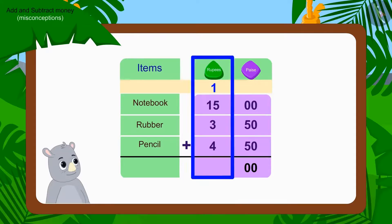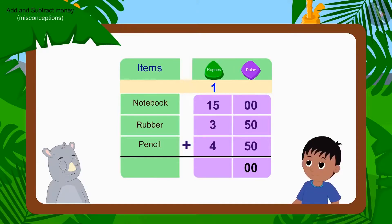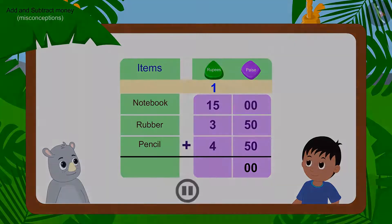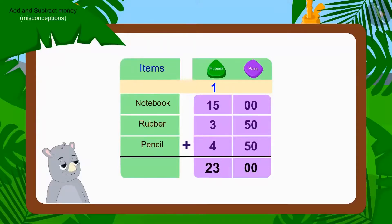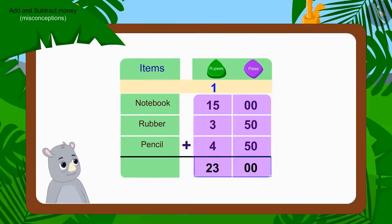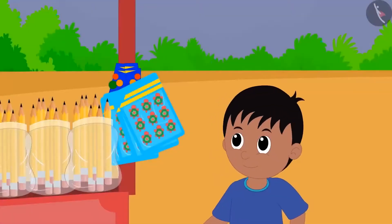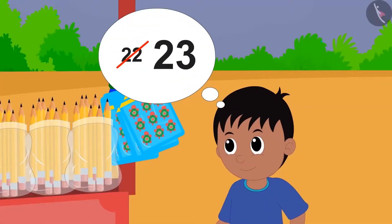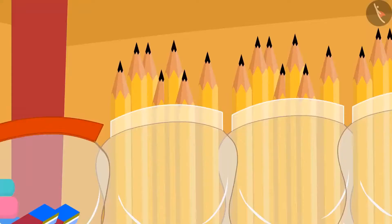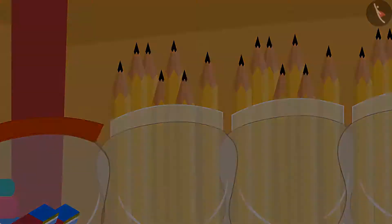Now can you tell, by adding the rupees, how much Raju actually has to pay Gaggu for the goods? You can pause the video and find the answer. Well done kids, you have found the right answer. Raju owes Gaggu 23 rupees for those items. Just like you, Raju too caught Gaggu's mistake and gave him 23 rupees.